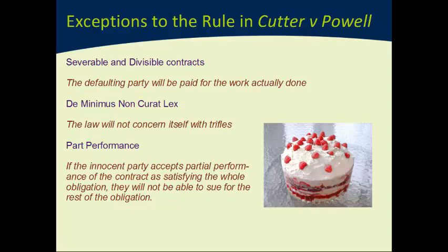The first exception relates to contracts which are severable or divisible. If the contract is to perform one action a hundred times and the party performs that action only seventy-five times, that would seem to be divisible — the obligation could be divided into a hundred repetitions, and therefore the counter-obligation also ought to be divided into a hundred repetitions. So if you were going to pay a thousand dollars overall, it might be fair to pay $750 for the work actually done. That works because the obligations are severable.